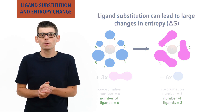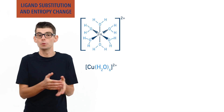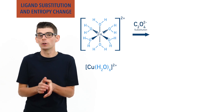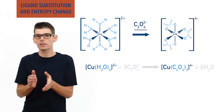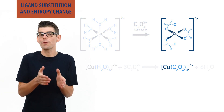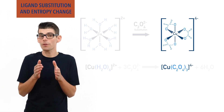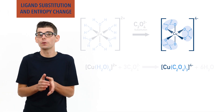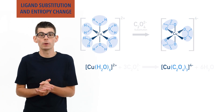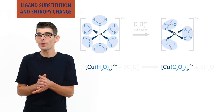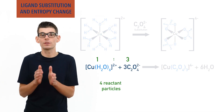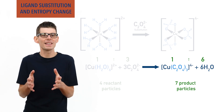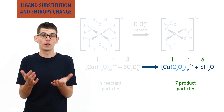For example, if the aqua complex ion [Cu(H₂O)₆]²⁺ undergoes ligand substitution with bidentate ethane dioate ions, the complex ion [Cu(C₂O₄)₃]⁴⁻ gets formed. The C₂O₄ part of the formula tells us that there are three C₂O₄ ligands in the complex. There are now only three C₂O₄ ligands compared to the starting six water molecule ligands. There are a total of four reactant particles on the left and seven product particles on the right. The whole complex ion counts as one particle, as everything in it is bonded together — it's effectively just one large ion.